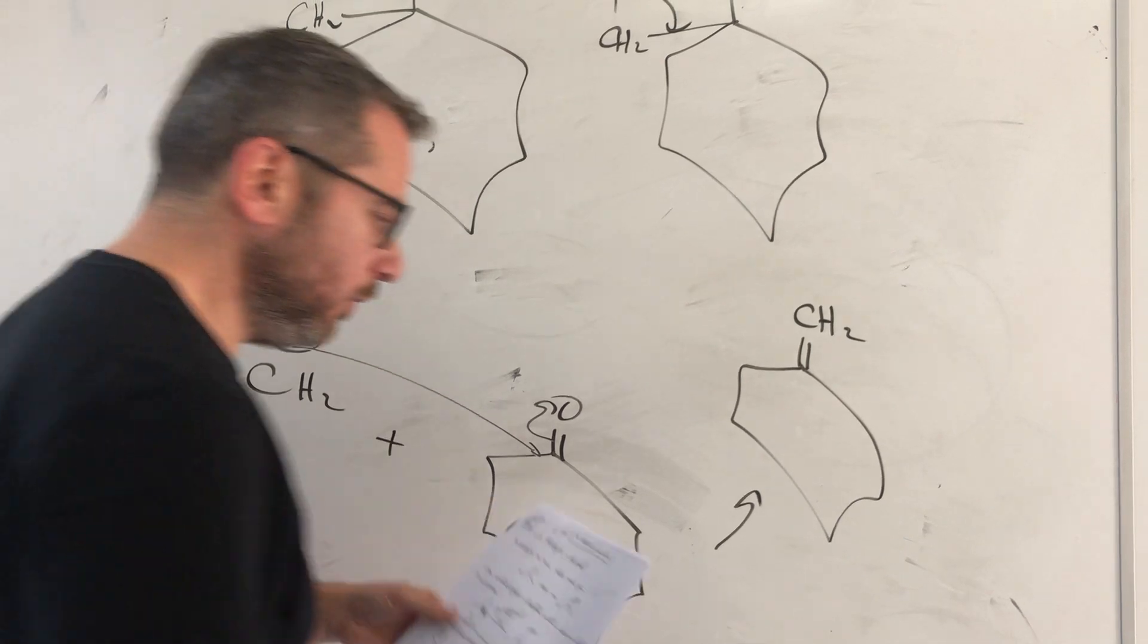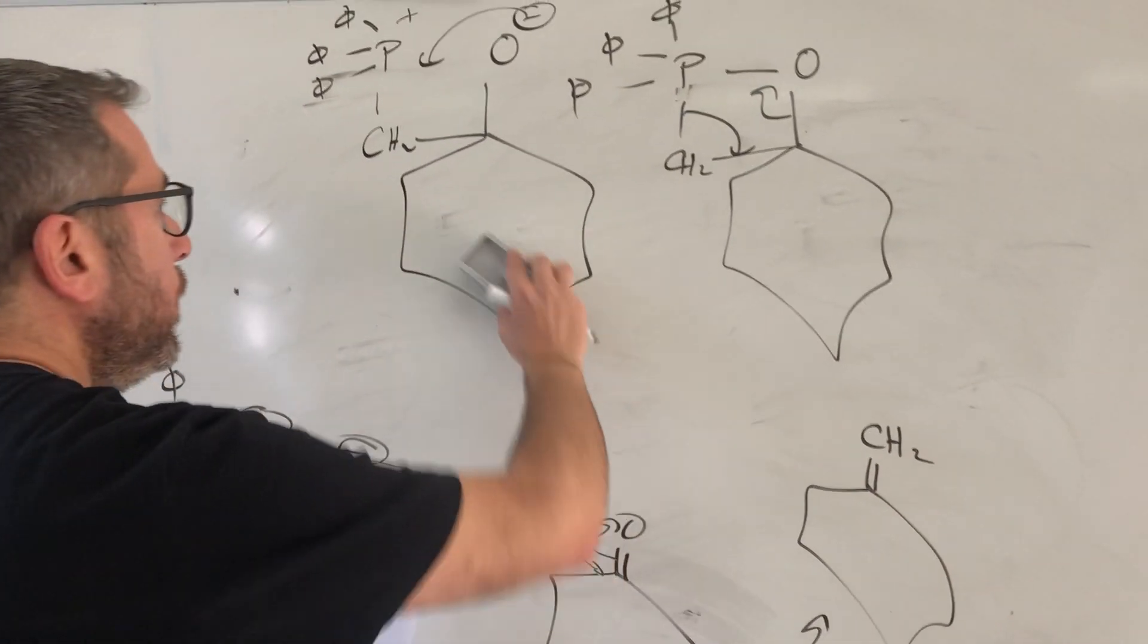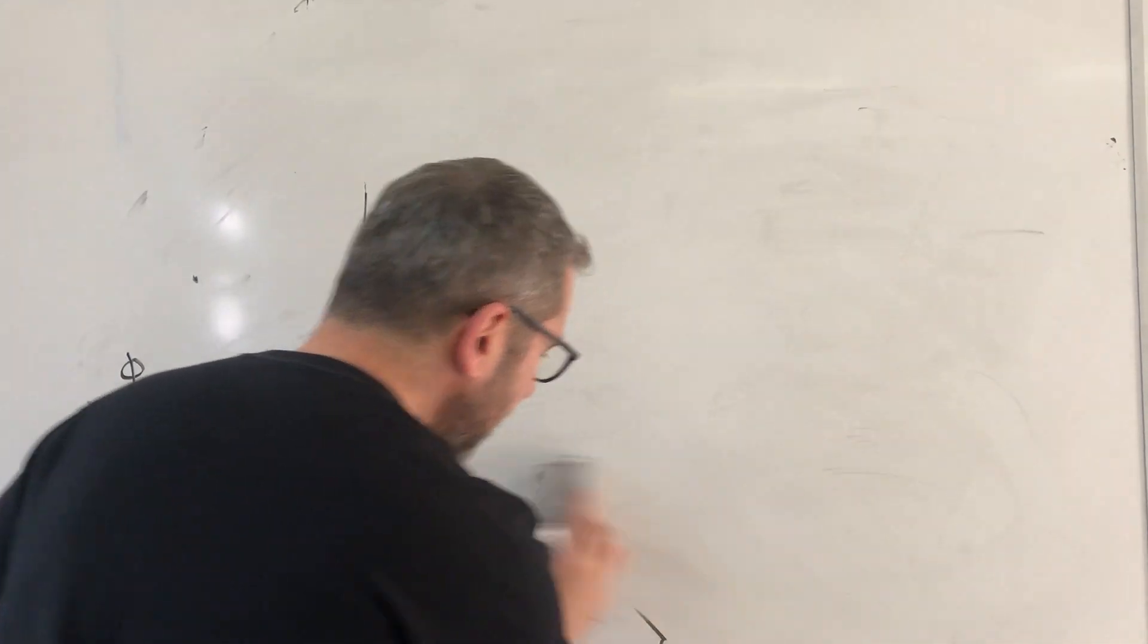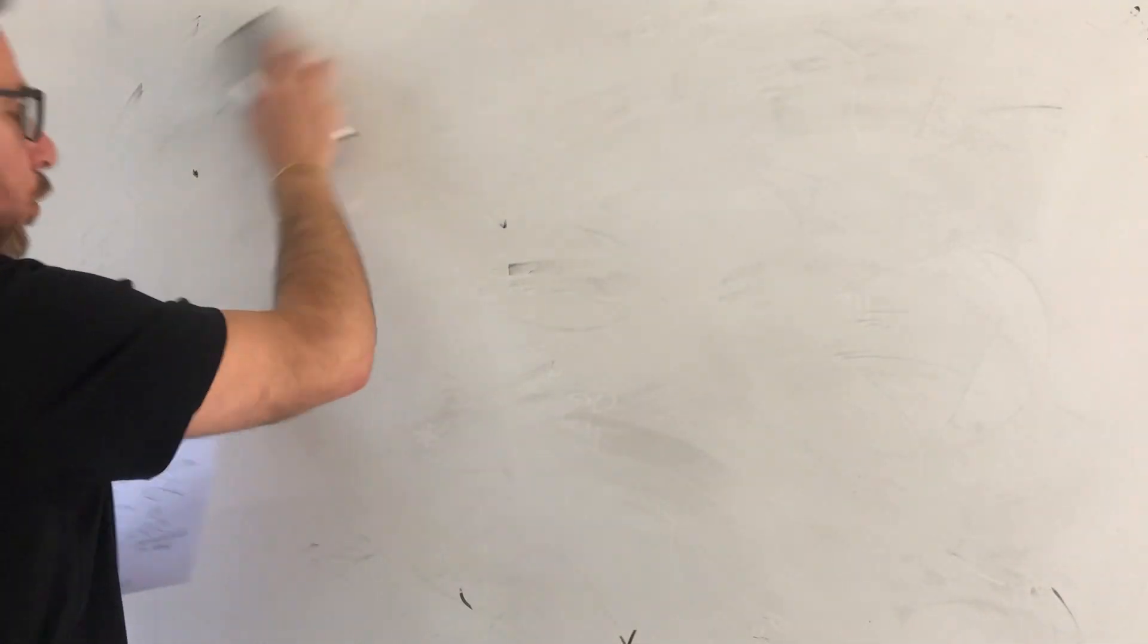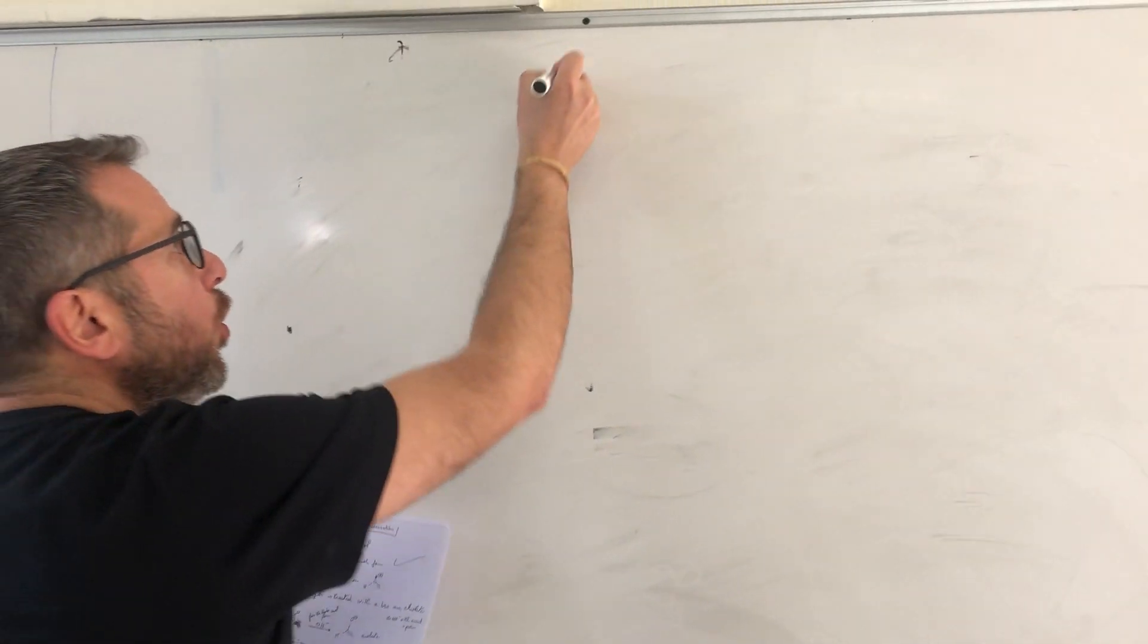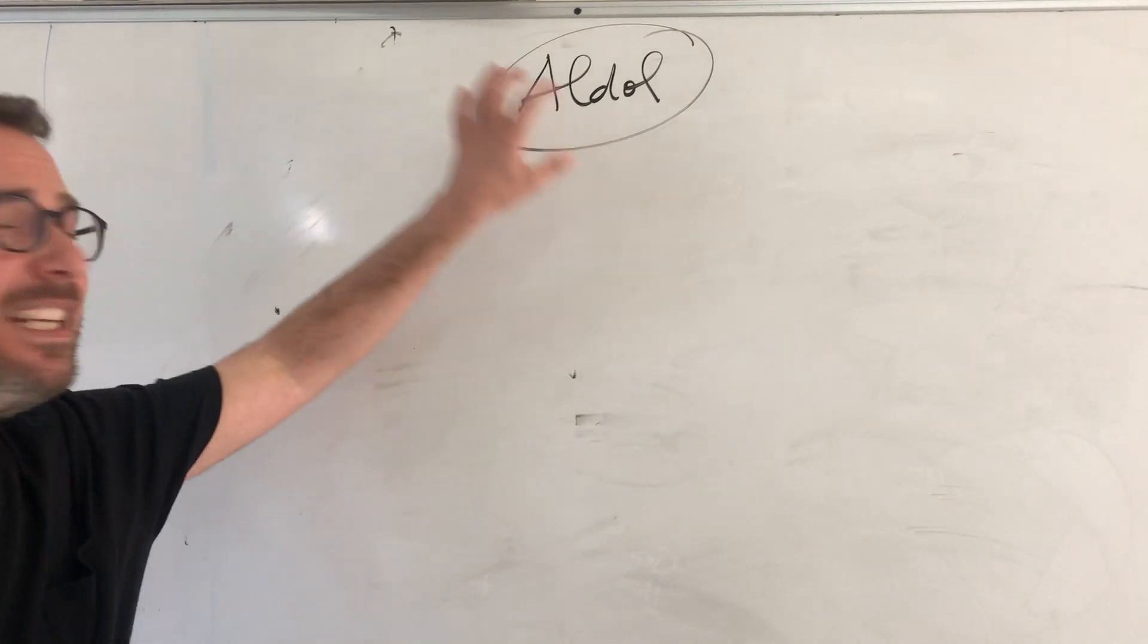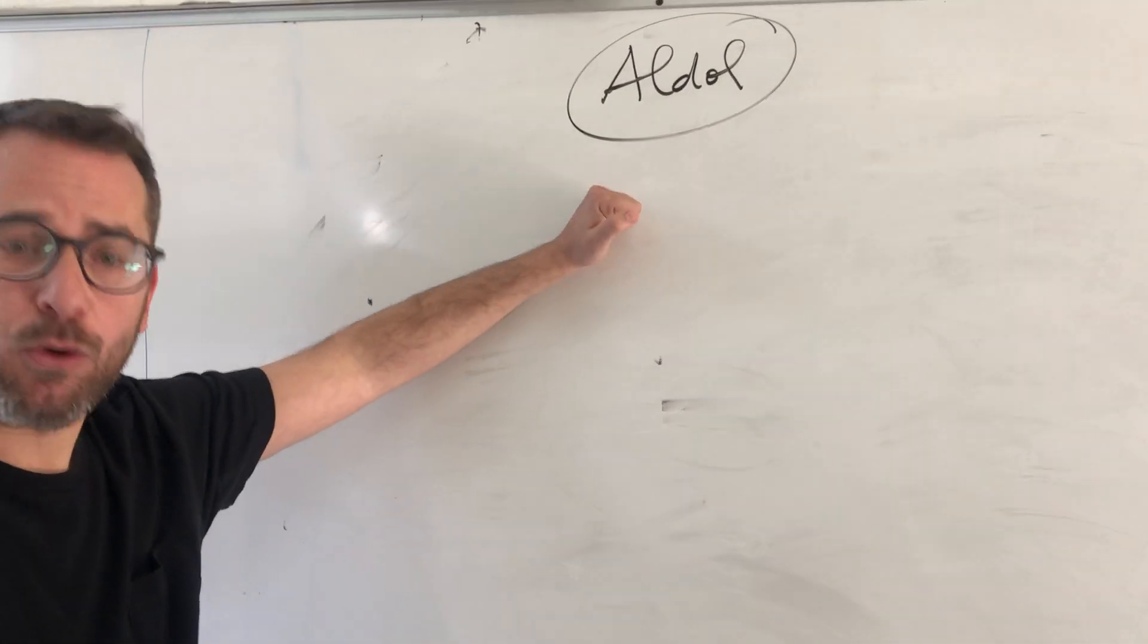Now we will move to another reaction, which is the aldol condensation. It's the last reaction in your note. I will do it before the contraction. So let's move one page. Aldol condensation. Aldol condensation is exactly the opposite of Cannizzaro. So it is two moles of aldehyde with H-alpha to give the aldol.